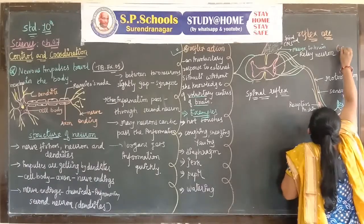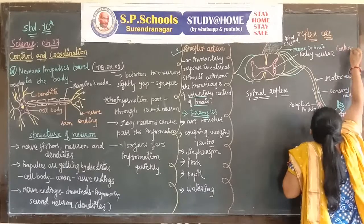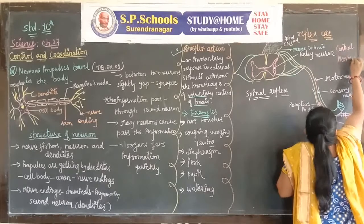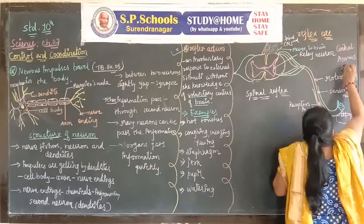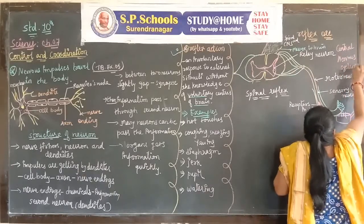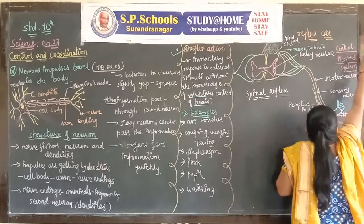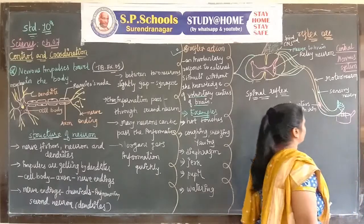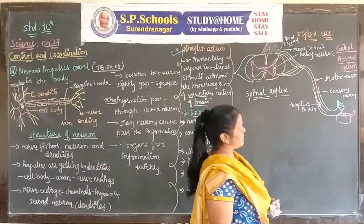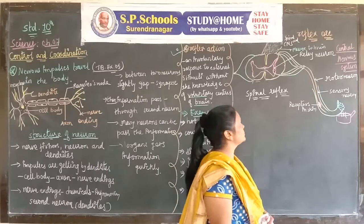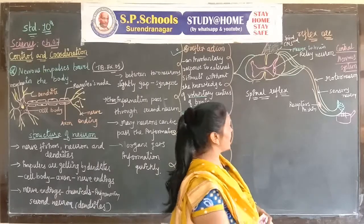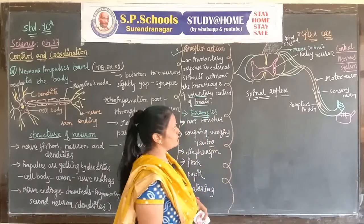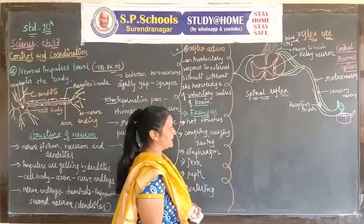In the exam, one word question: write the full form of CNS — Central Nervous System. The central nervous system is connected with two parts: brain and spinal cord. The action carried out by the spinal cord is called reflex action. The path which shows the reflex action is called the reflex arc.